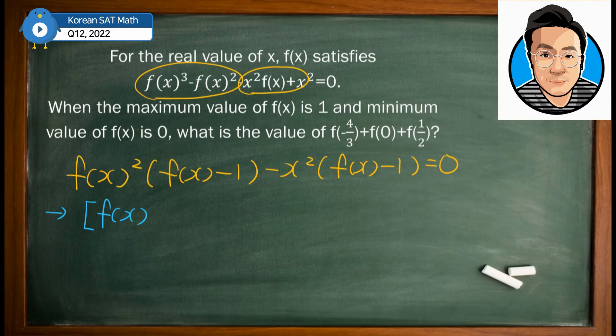f(x) - 1 multiplied by f(x)² - x². This needs to be equal to 0.